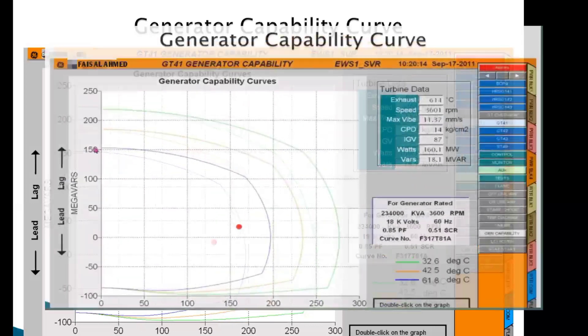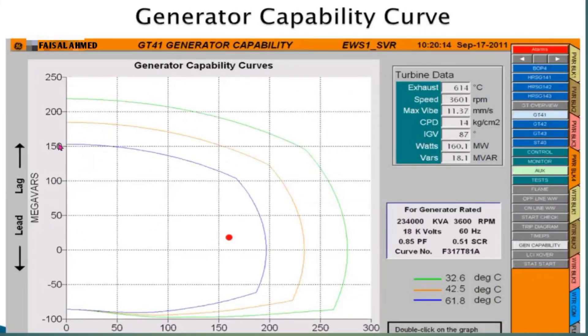Normally I have seen on the generator we are not running the generator below 0.95. Normally we keep between 0.95 and 1. So this was about the capability curve.